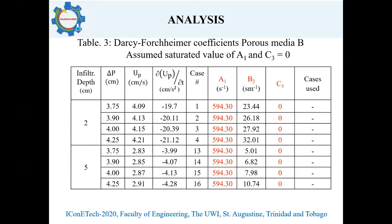Another analysis was conducted in which two common assumptions are made: the first being that the A1 coefficient is equivalent to the saturated hydraulic conductivity of the media, and the second that the C3 coefficient is equal to zero since the media is coarse-grained. Using porous medium B as the example, A1 is selected as 594.3 while C3 equals zero. Substituting these values into cases one to four reveals that the B2 coefficient still varies with both the pressure difference and the infiltrated depth. Therefore, even when reasonable assumptions are made, a single combination of A1, B2, and C3 is invalid over the entirety of the unsaturated flow problem.